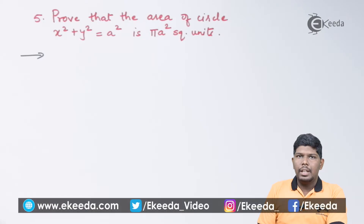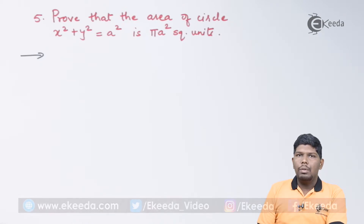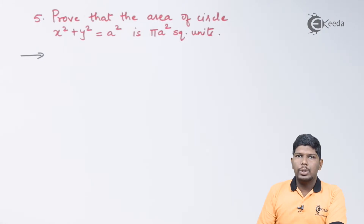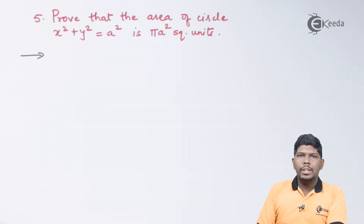Prove that the area of the circle x² + y² = a² is equal to πa² square units. As you can see, this is the equation of a circle which is in standard form.